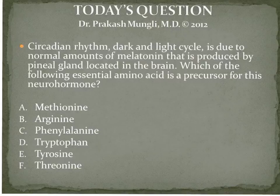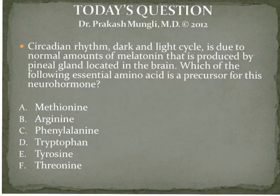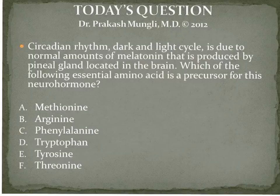Recalling tryptophan metabolism, one of the special products coming from tryptophan is melatonin. Tryptophan is converted to serotonin, melatonin, and niacin. Serotonin is in serotonergic neurons, melatonin is synthesized in the pineal gland, and 60 milligrams of tryptophan is converted to niacin. So the answer is obvious — it is tryptophan. Option D is the correct answer.